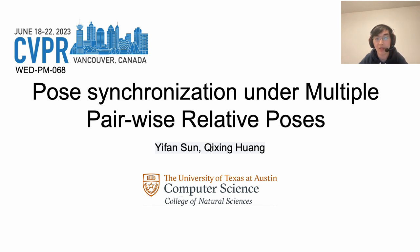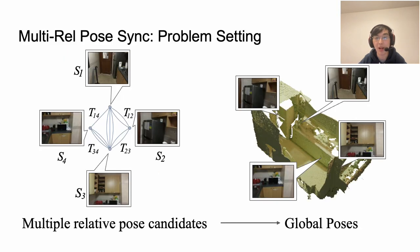Hi everyone, I'm Yifan. Today I'm going to introduce the work pose synchronization under multiple pairwise relative poses. This work is done by Yifan and Chixing from the University of Texas at Austin. Given pairwise transformations between several observations of a 3D model, the pose synchronization problem aims to find the global poses of each observation.